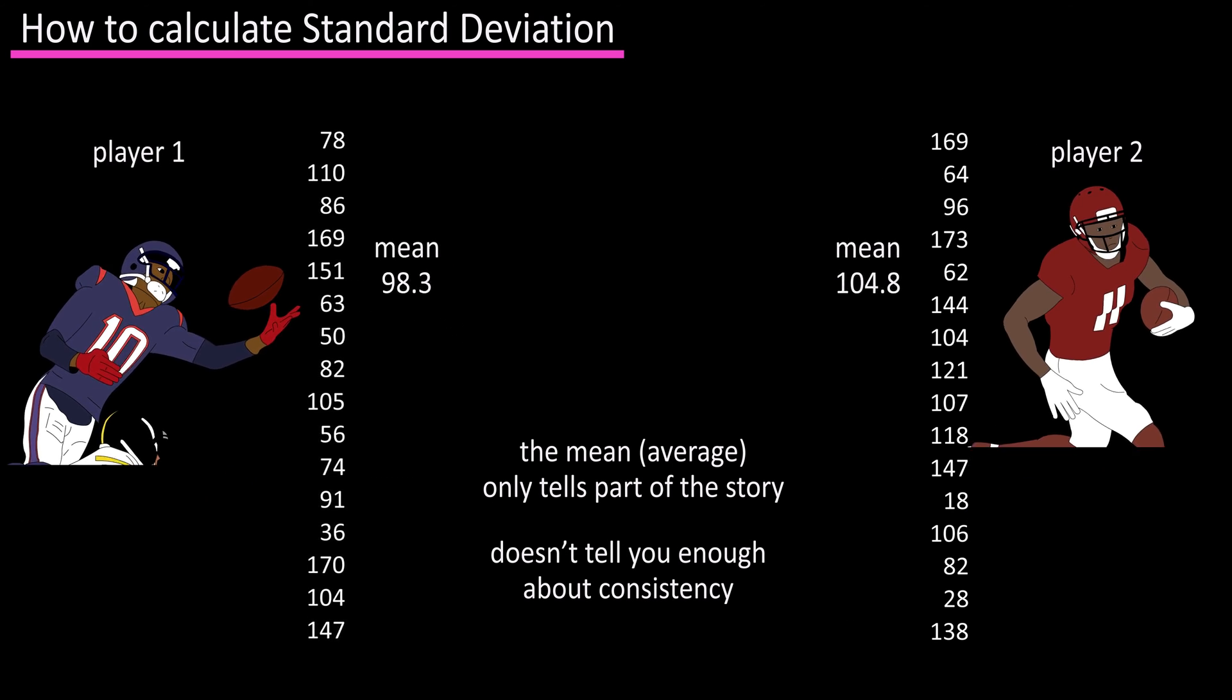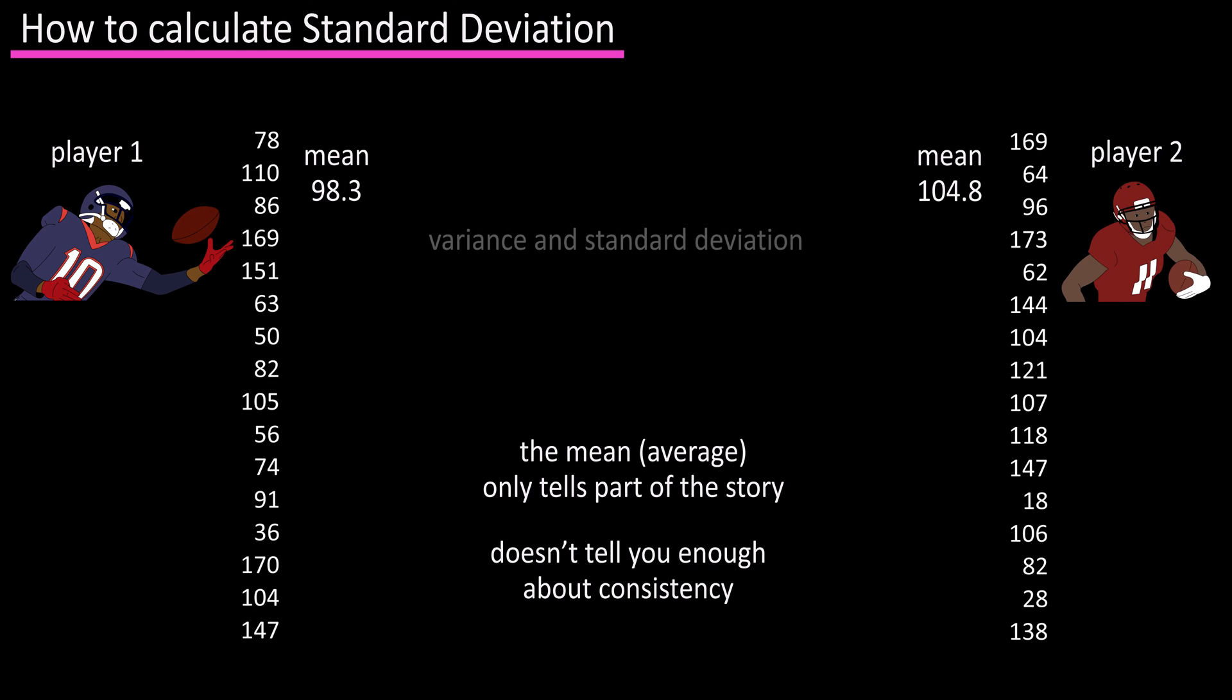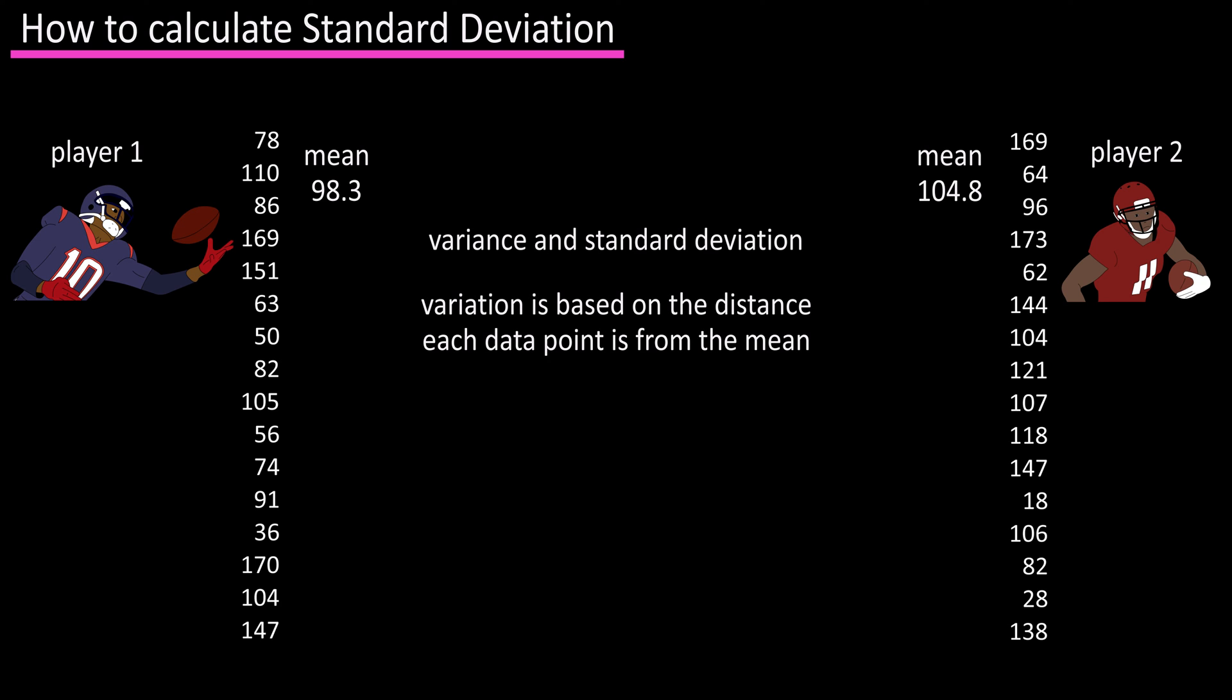To look more closely at the consistency of this data we can look at the variance and standard deviation of the data for each of the players. Data variation is based on the difference or distance each data point is from the mean.